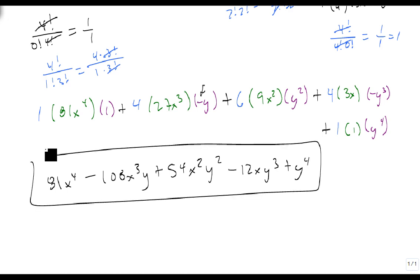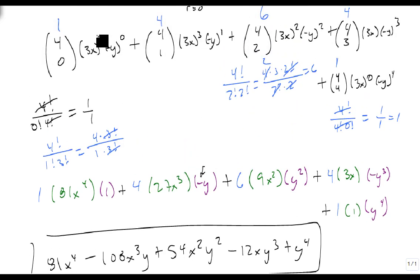So we write out what we need, the chooses, we put the first term to the first power and 0 and it decreases by 1 and increases by 1, and we get our answers. We're just going to show one more quick example.